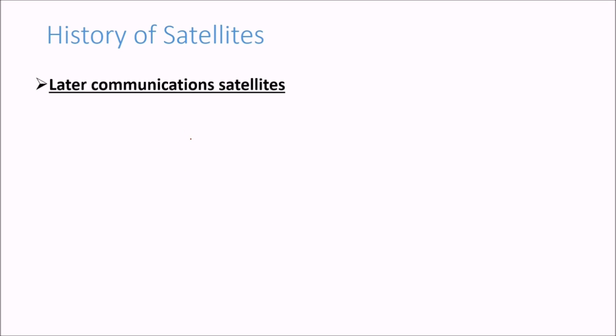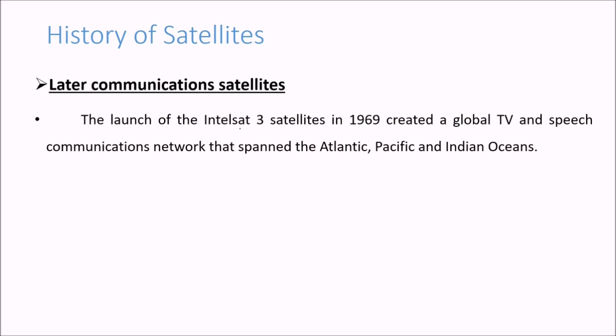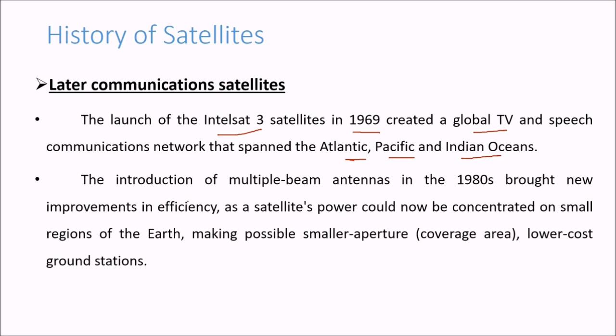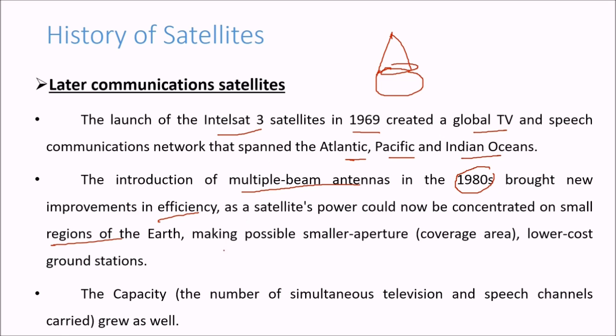Then come the later communication satellites. The launch of Intelsat 3 satellites in 1969 created a global TV and speech communication network that spanned the Atlantic, Pacific, and Indian Oceans. The introduction of multi-beam antennas in the 1980s brought a new improvement in efficiency as the satellite power could now be concentrated on a small region of the earth, making possible smaller apertures in its coverage area. And of course the ground stations were low cost, so the capacity grew as well.